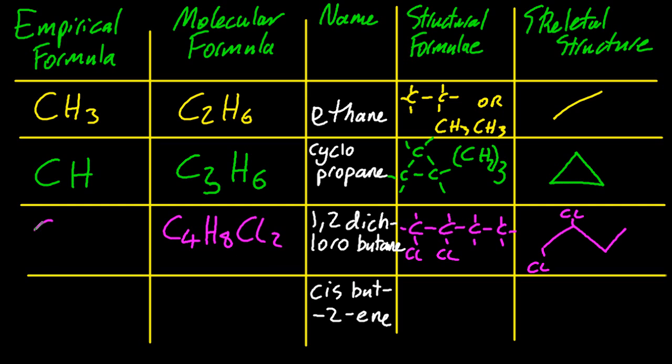The empirical formula, the simplest ratio, is C2H4Cl. If you're doing SL, you don't need to know about the cis, so you can ignore the cis here.